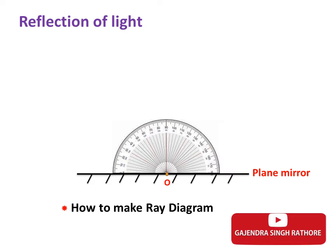Now, make three points on 90 degree, 50 degree and 130 degree like this by protractor. This is 90 degree point, this is 50 degree point and this is 130 degree point.